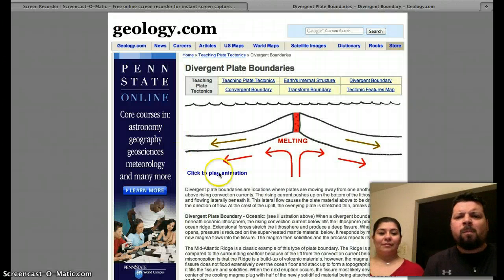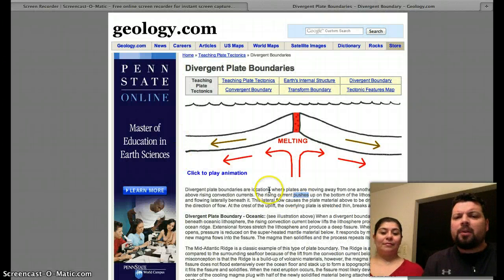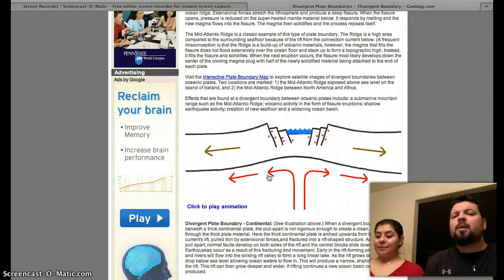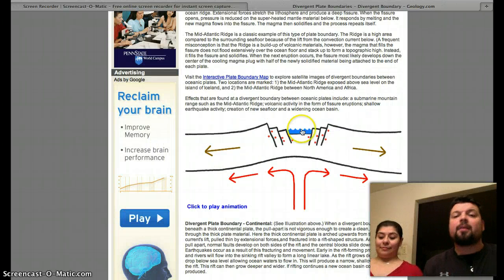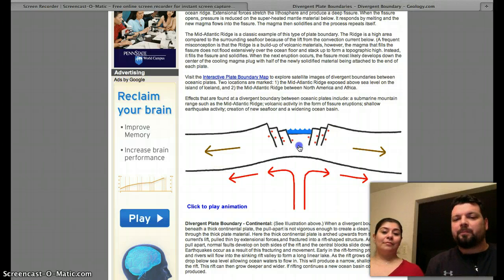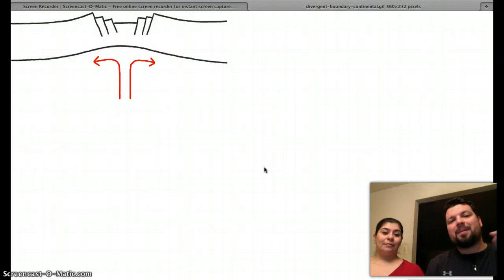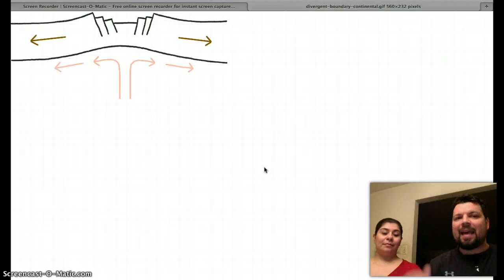We're going to go ahead and continue. So let's go back. So now, we already know what divergent means, right? Yes. Divergent means? To divide. Divide. Dividir. Borde constructivo. The reason they call it constructivo in Español is because it makes land. Let's click on this one here. This is a divergent boundary, but this is a boundary that happens on land.